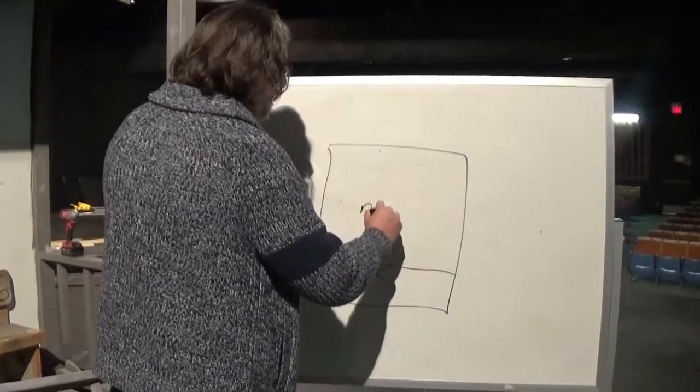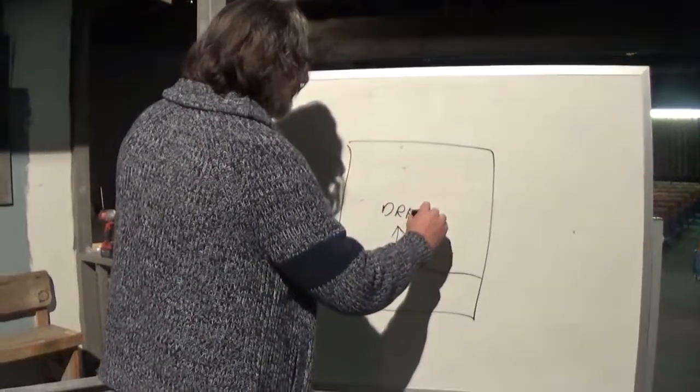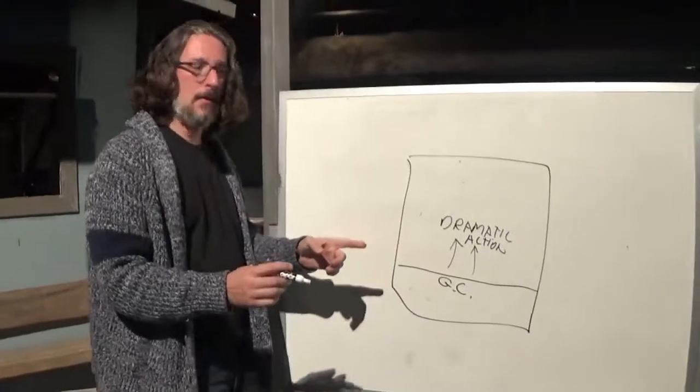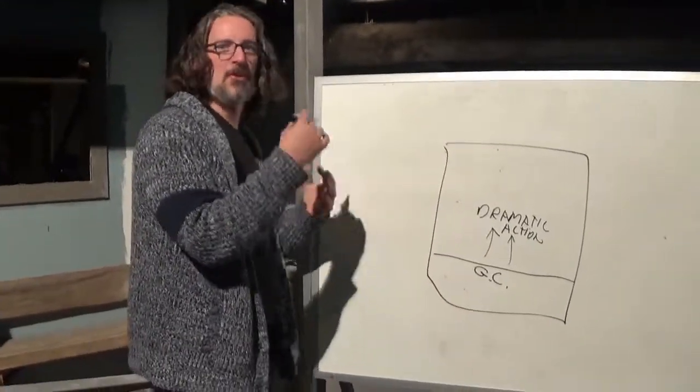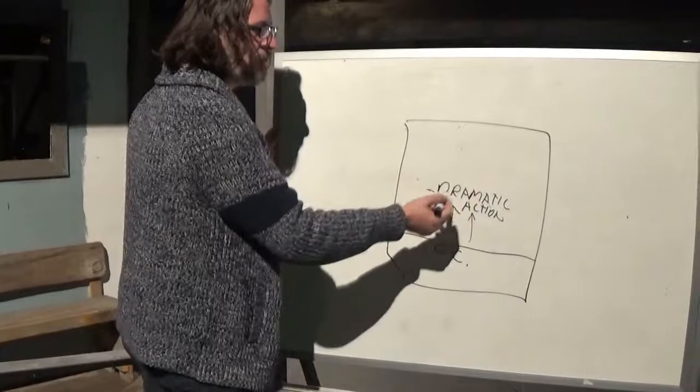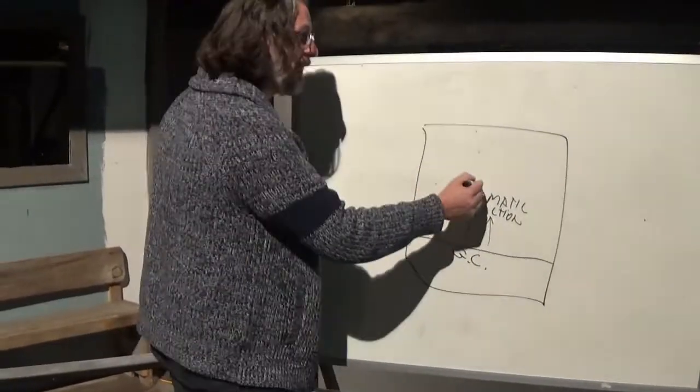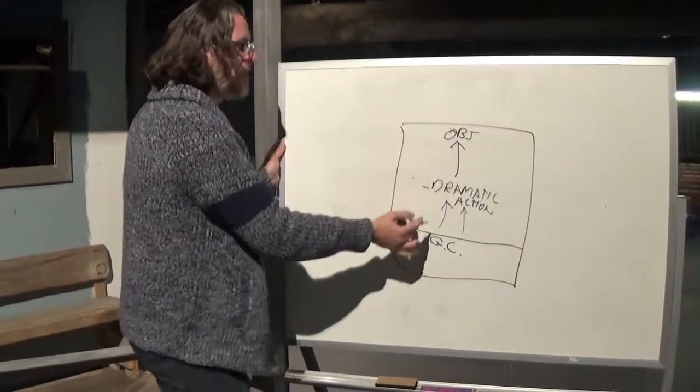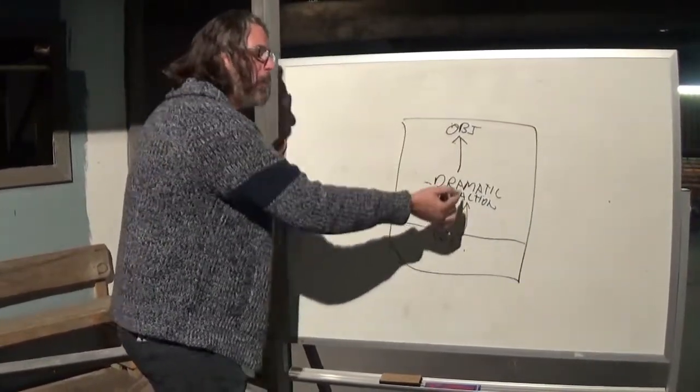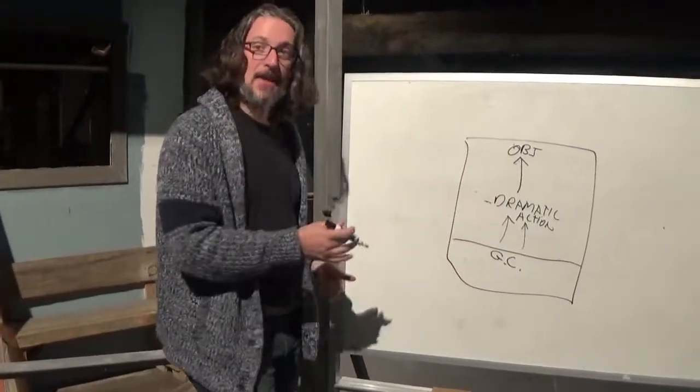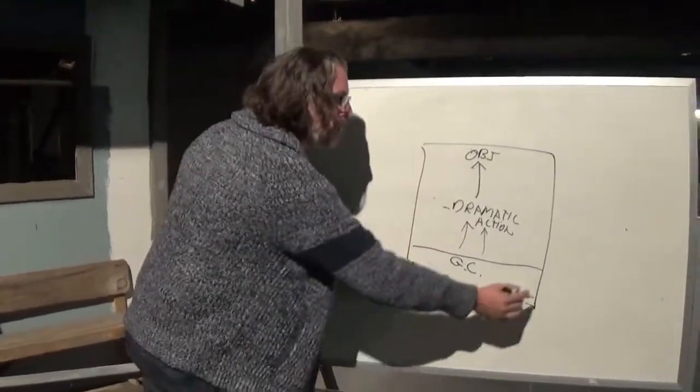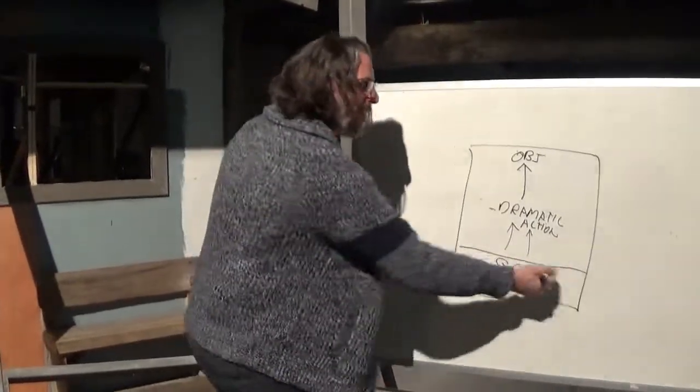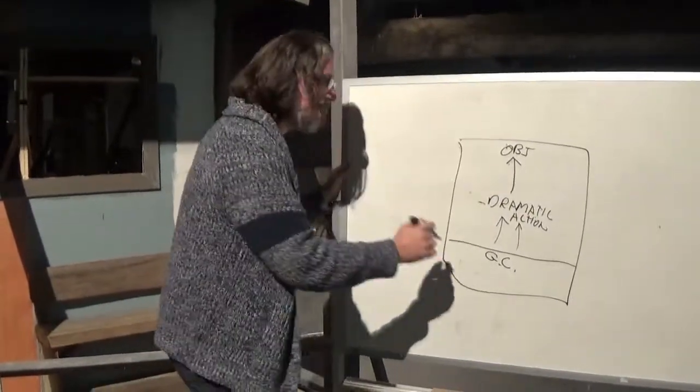Dramatic action, which you may remember, is from before where we talked about what is your objective and your tactics. So your tactics have to do with your dramatic action. What are you doing to get your objective? So to figure out what the dramatic action is, what the objective is, what your tactics are, you have to be rooted in given circumstances. This is the foundation. Everything comes from that.